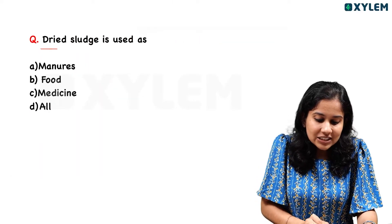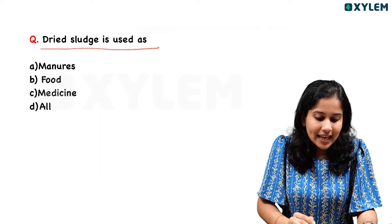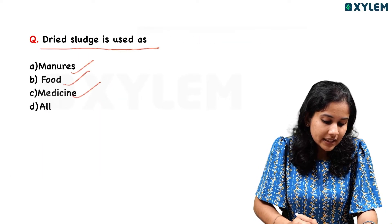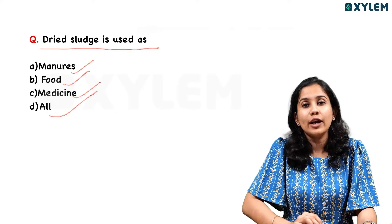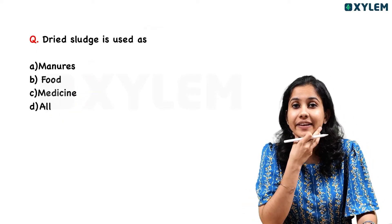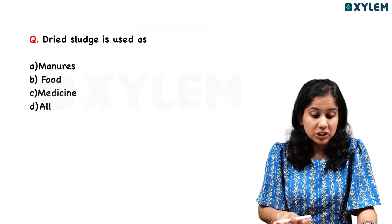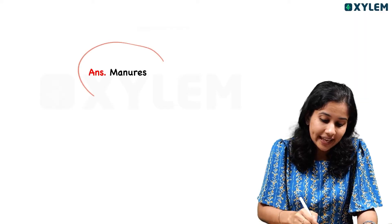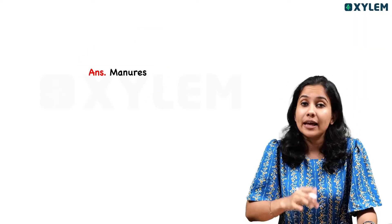Next question: dried sludge is used as — manure, food, medicine, or all of these? The answer is dried sludge is used as manure.